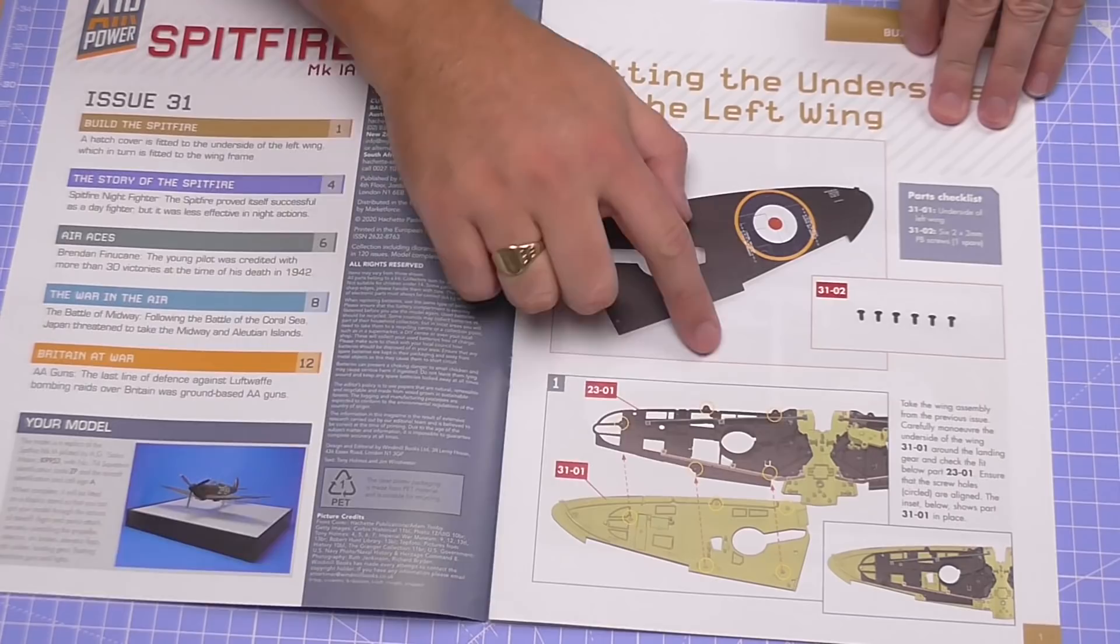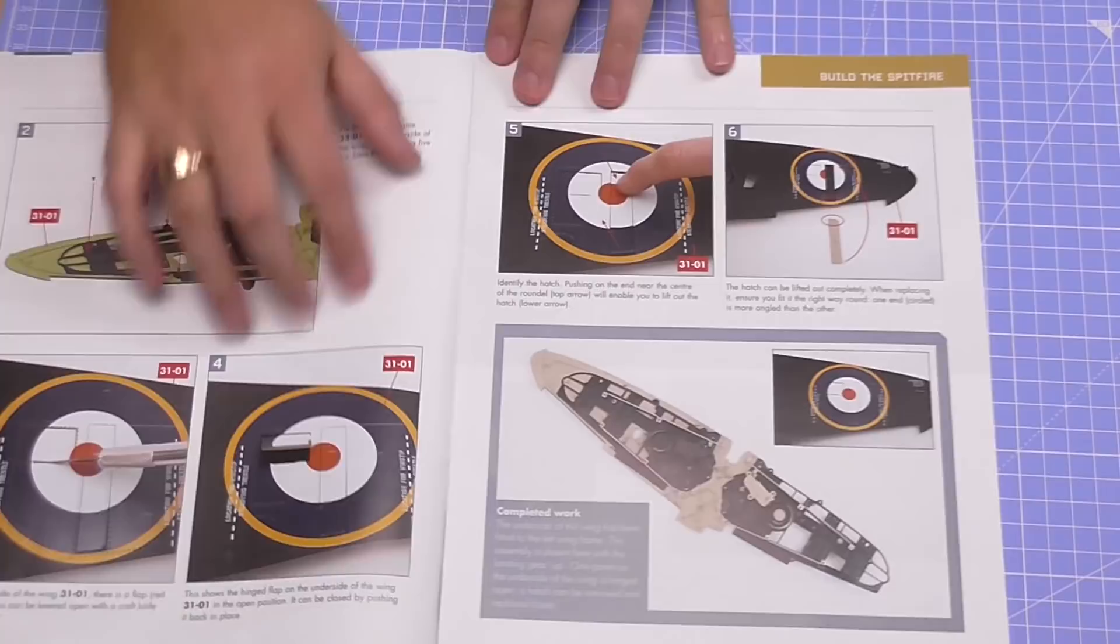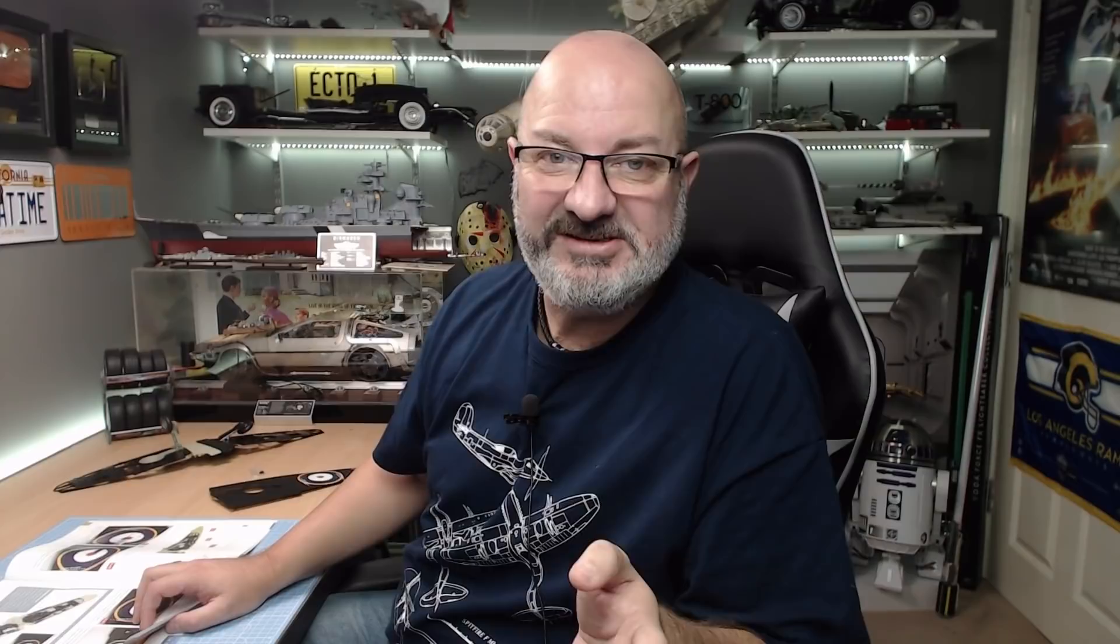This is the stance that the Spitfire is going to be going on. All we're going to be doing is mounting the wing to this frame and then just cutting the decal so we can get these hatches off when we want to. I don't know, look at them, see what they do - not actually sure what the hatches do to be honest with you.